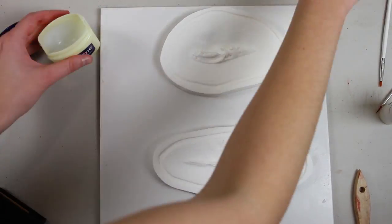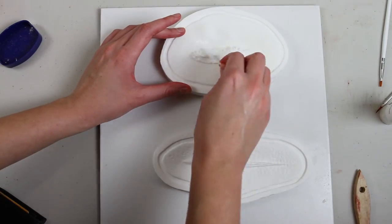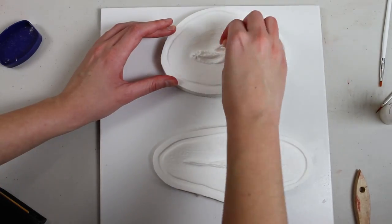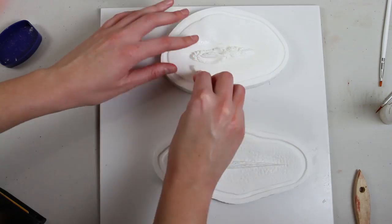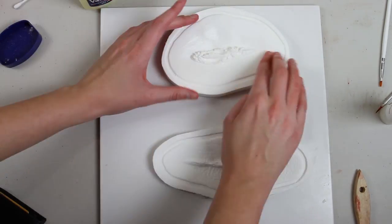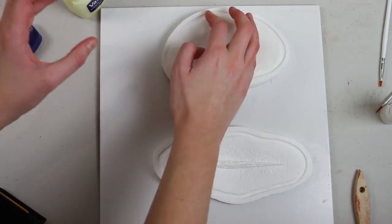First of all, you want to put something on the mold to help it release. You can use a release spray. I'm just using Vaseline here because it's the easiest thing. Put a layer of Vaseline over the top, leave it to soak for a couple of minutes, and then get a tissue and wipe away a lot of the excess Vaseline.